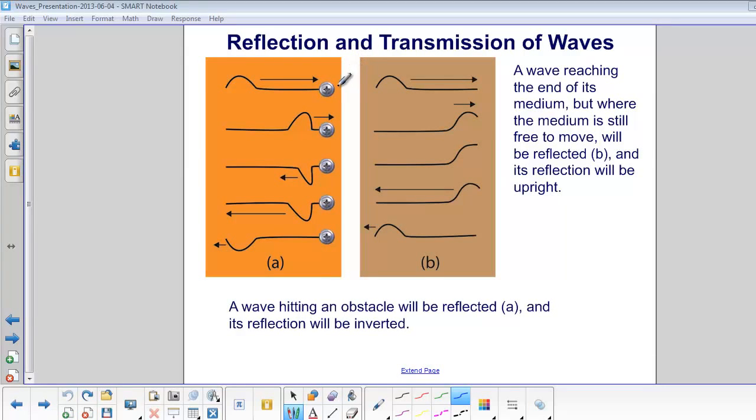When a wave pulse hits a fixed end, it will be reflected and its reflection will be inverted. When a wave pulse hits a free end, it will be reflected and its reflected pulse will be upright.